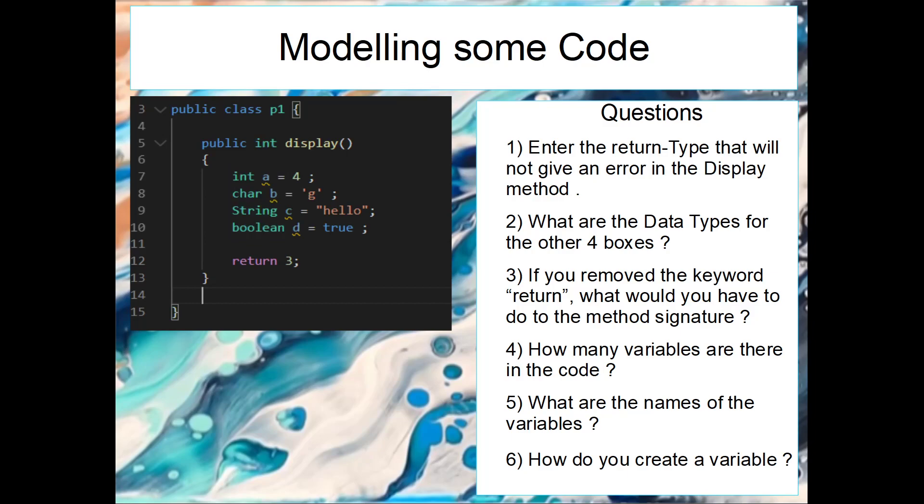Before we stop the video I just wanted to show you what the code looked like. So if we look here this is our method signature, so we have the access modifier, we have the data or return type here, and then the method's name. For a variable we have the data type, the variable name, and then we need to put in the variable. I just want you to have a look at all of these data types here.